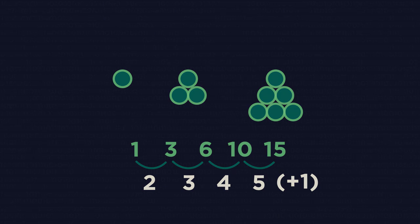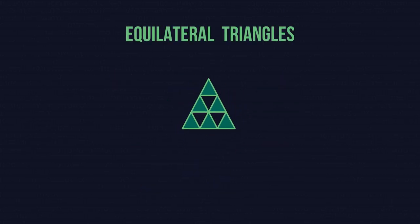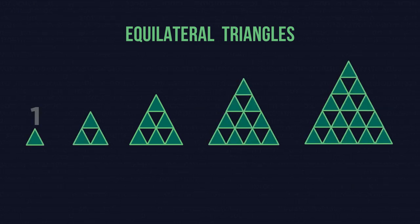You can imagine this by stacking equilateral triangles. For example, the first triangular number is 1 with one row of triangles. The second triangular number has 2 rows, giving 3 triangles. The third number needs 3 rows, so gives 6 triangles and so on.